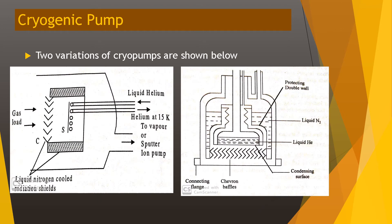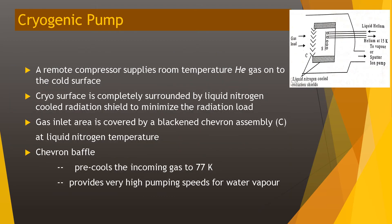Two variations of cryopumps are shown. In the first figure, liquid helium is placed inside along with liquid-nitrogen-cooled radiation shields; gas loads enter the pump and pass through chevron baffles. A remote compressor supplies room-temperature helium gas to the cold surface. The cryo surface is completely surrounded by a liquid-nitrogen-cooled radiation shield to minimize radiation load. The gas inlet area is covered by a blackened chevron assembly at liquid nitrogen temperature; the chevron baffles pre-cool the incoming gas to 77 K, providing very high pumping speed for water vapor.